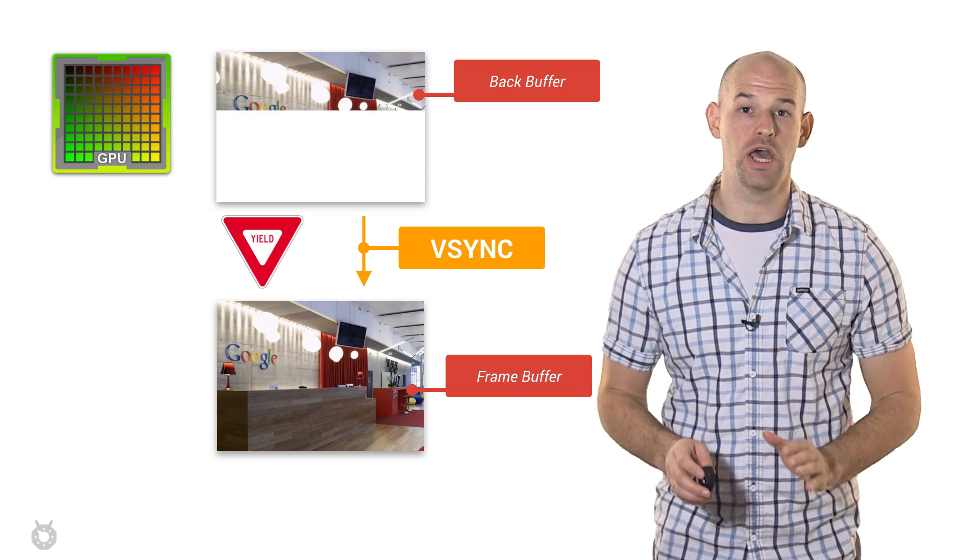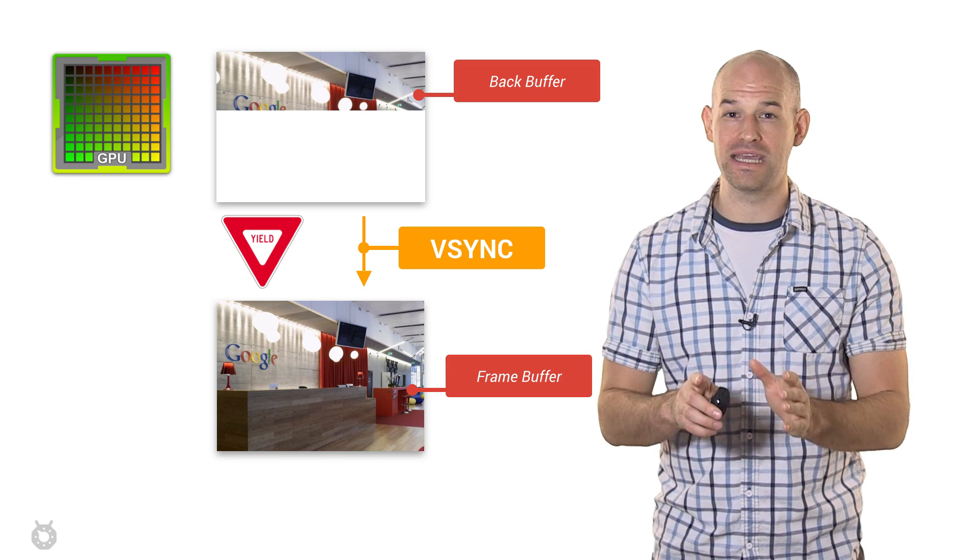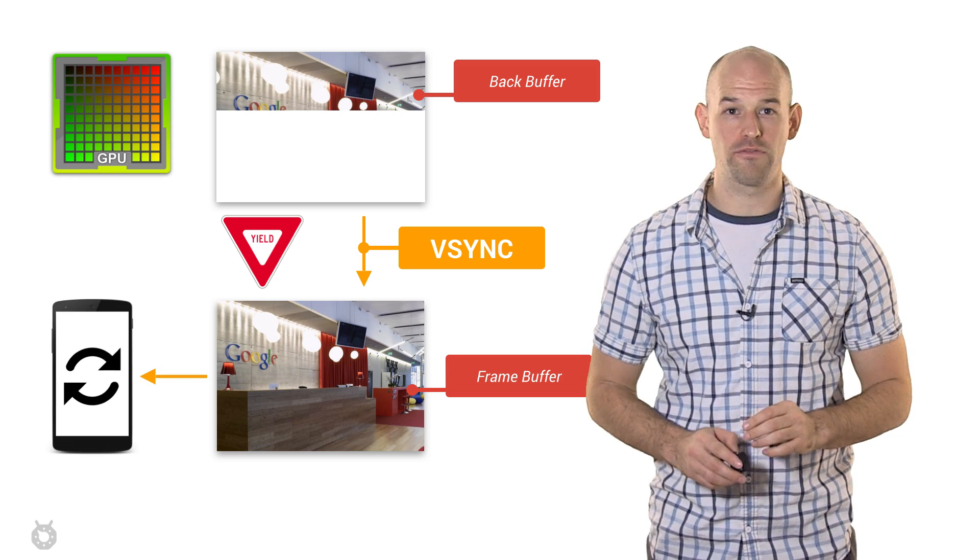VSync, or vertical synchronization, will basically keep this copy operation from back buffer to frame buffer from happening if the screen is in the middle of refreshing from it.